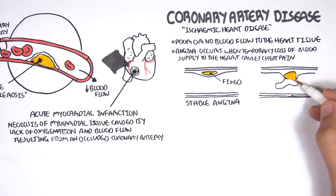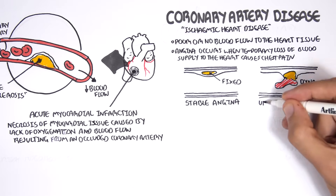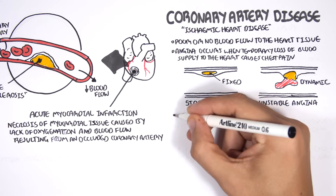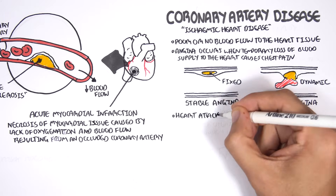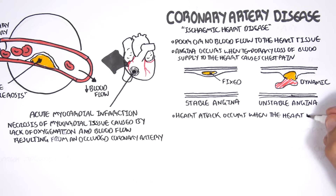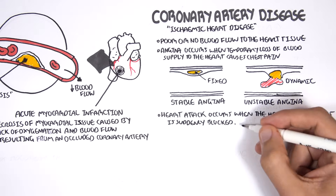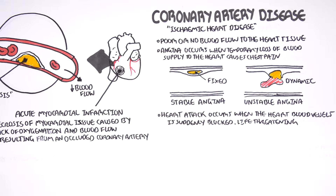Unstable angina is a result of a hemodynamically unstable plaque, and we have thrombosis involved. A heart attack occurs when the heart blood vessel is suddenly blocked, and this is life-threatening and leads to myocardial infarction.